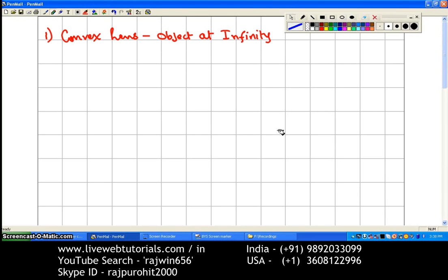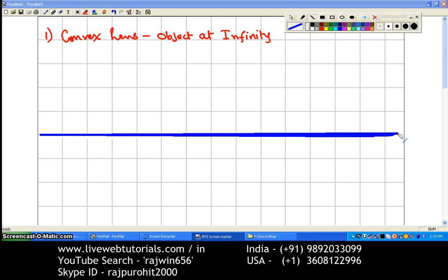Convex lens, the object is at infinity. Now the first thing that we are going to do here again, we are going to draw our principal axis first, and then we are going to mark here the lens. So this is our lens, three lines above, three lines below.